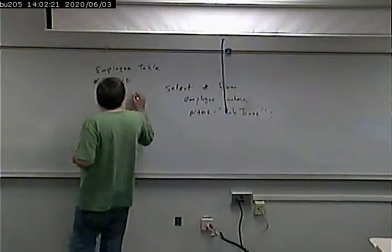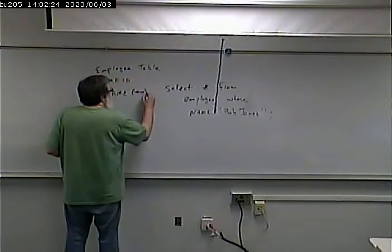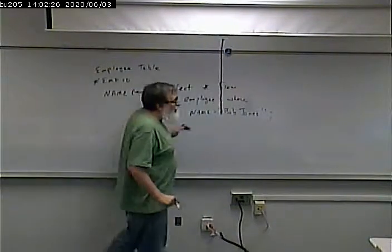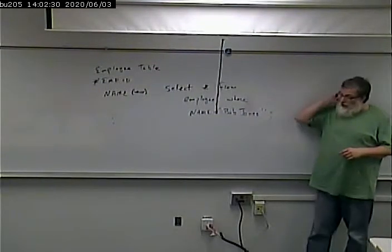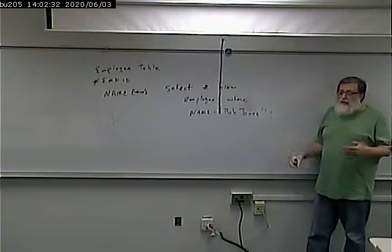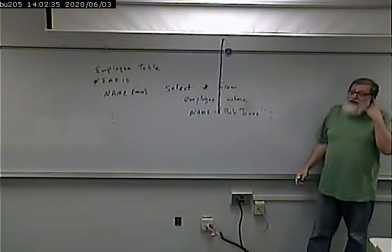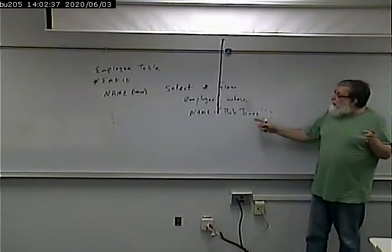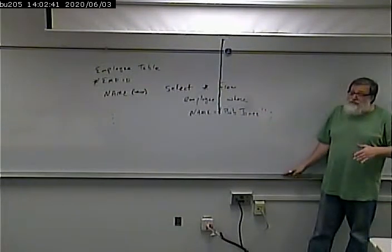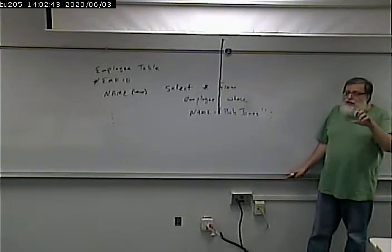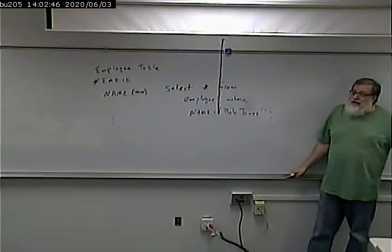If, however, I added an index to this and execute the same statement, the database engine is smart enough to look and say: how am I going to pull that information out? And it says, look — there's an index by name, so I'm going to use that index. So the database engine makes the decision itself of what the best way to retrieve the data is, and it plans it.